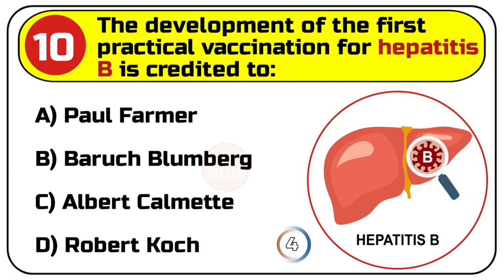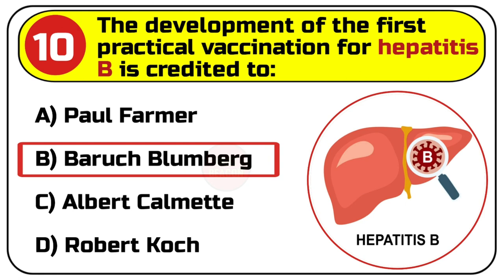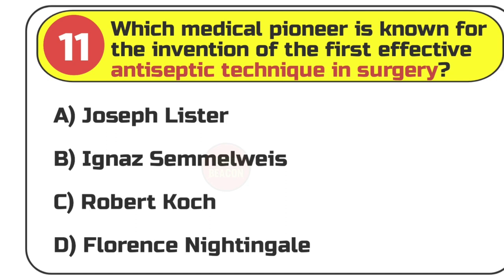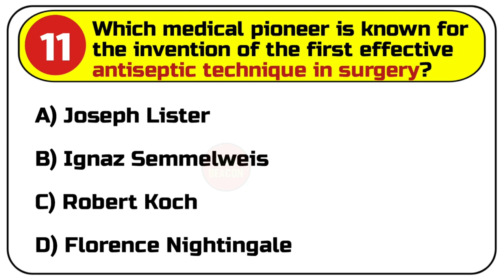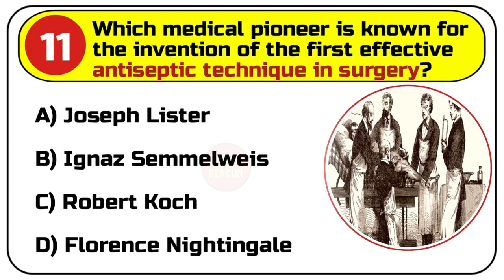Correct answer is B. Baruch Blumberg. Question number 11. Which medical pioneer is known for the invention of the first effective antiseptic technique in surgery? Options are: A. Joseph Lister, B. Ignaz Semmelweis, C. Robert Koch, D. Florence Nightingale.